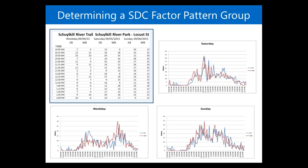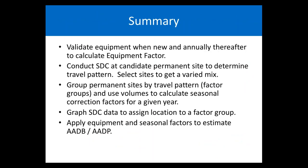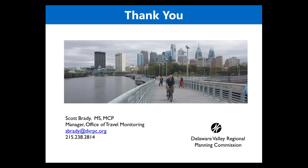In summary: validate your equipment when new and annually thereafter to calculate your equipment factor. Conduct a short duration count at candidate permanent sites to determine travel patterns. Select sites to get a varied mix. Group permanent sites by travel pattern factor groups and use those volumes to calculate seasonal correction factors. Graph short duration count data as it comes in to assign the location to a factor group, then apply equipment and seasonal factors to estimate AADBT and AADPT. Thank you all for listening.